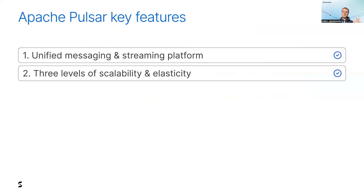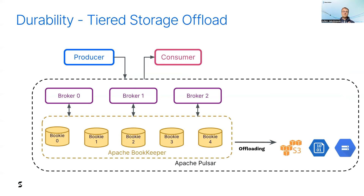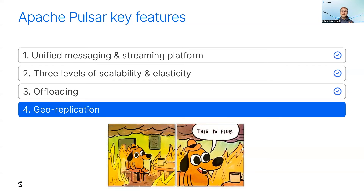I just presented how you can scale Pulsar with its multi-layered architecture, which is a second key feature of Pulsar. Now let's shift our focus to another feature: offloading. You may need to store a large amount of data and retain it for a long time depending on your use case — you'll need to read old messages produced days or months ago. With Pulsar, you can offload those messages to external storage, and this is transparent for the consumers.